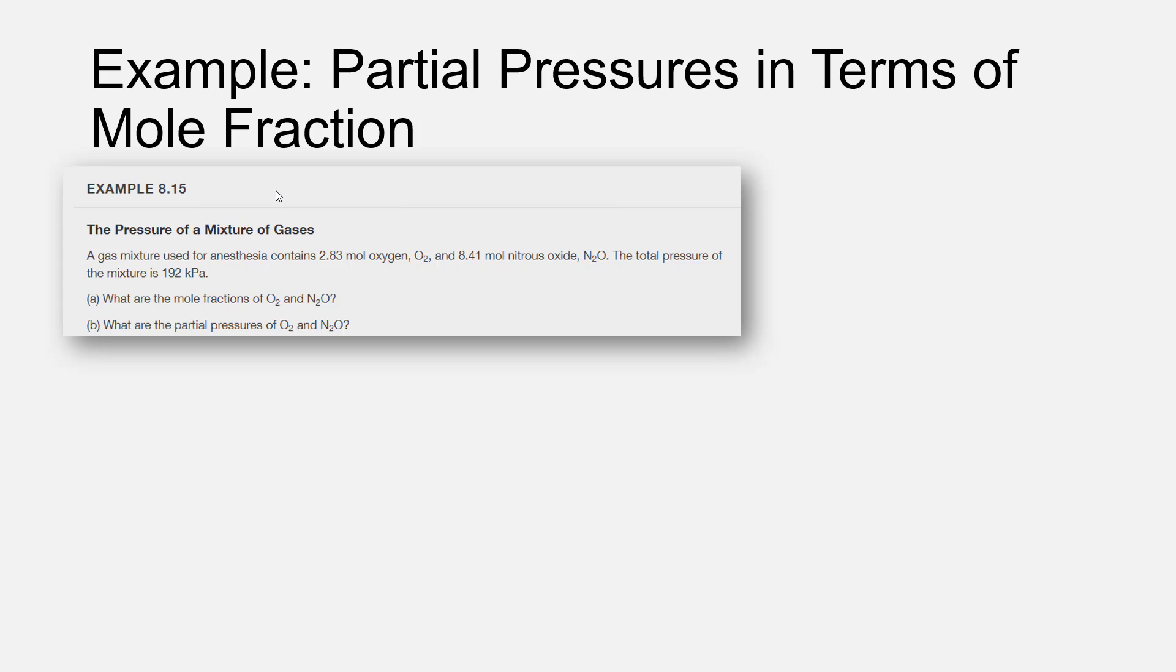To answer the first one, we need to recall the definition of a mole fraction is the moles of the chemical you're interested in divided by the total moles in the mixture. So if you're calculating the mole fraction of oxygen, you need the moles of oxygen in the numerator divided by the moles of oxygen plus the moles of the other components in the mixture.